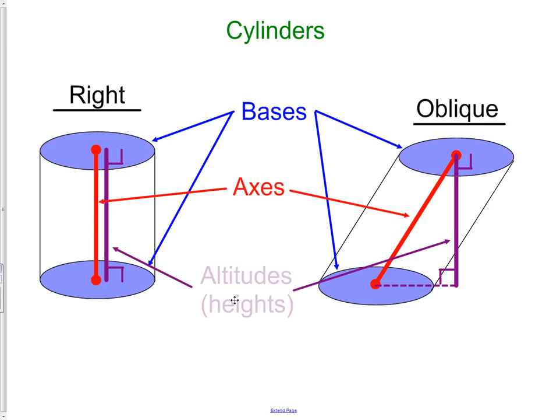And lastly, we have the altitude. The altitude is the height of the object. The height, remember, is always measured perpendicular to the objects it's measuring. So if we want the height of a cylinder, we'd measure from base to base at a perpendicular. It's very important to realize that the axis, which connects the two bases together, and the height are not always the exact same.